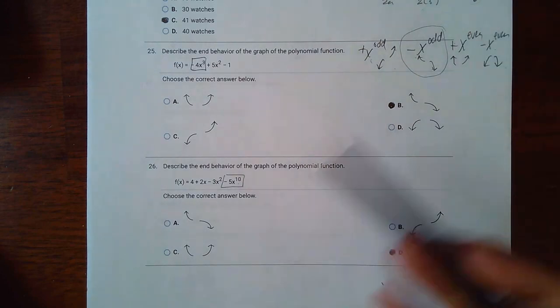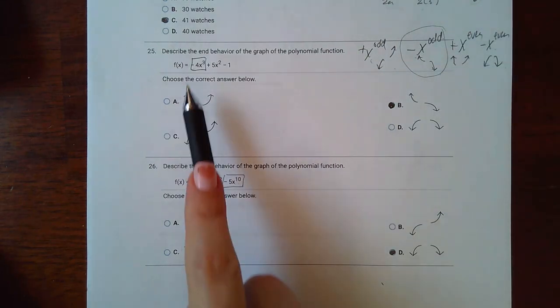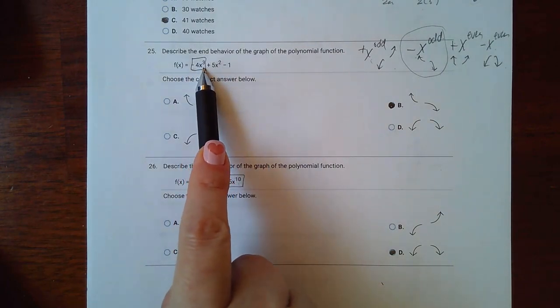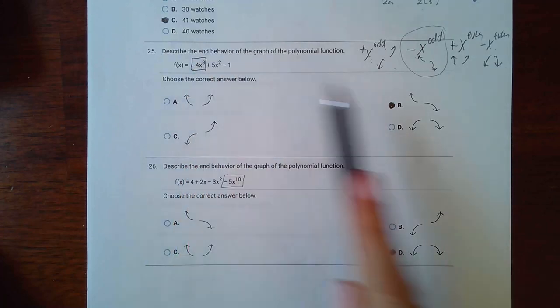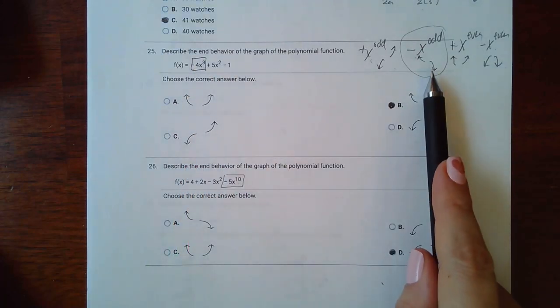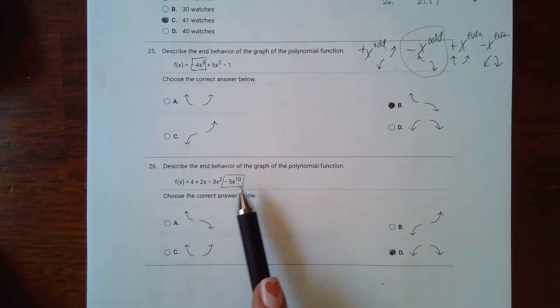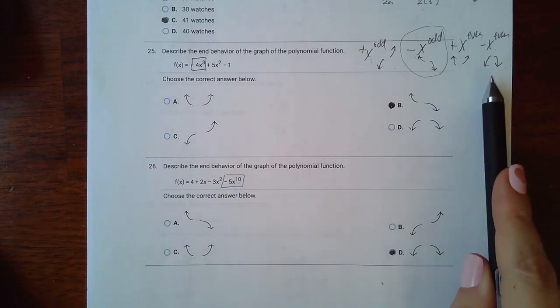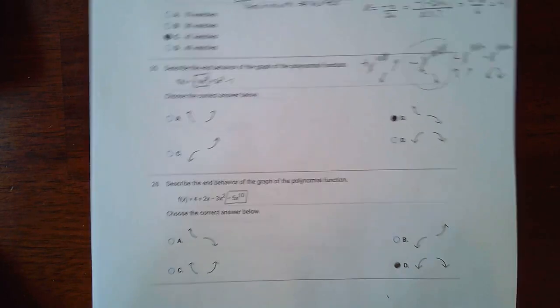And then to determine which one of those four cases you have, you want to identify the term with the highest exponent. So this was the term with the highest exponent. It had a negative coefficient with an odd exponent, so it fit this description, which is why we chose that as the end behavior. Here the term with the highest exponent was this guy. Coefficient is negative but the exponent is even. So it's actually this case and so we chose the end behavior that was going downward on both ends.